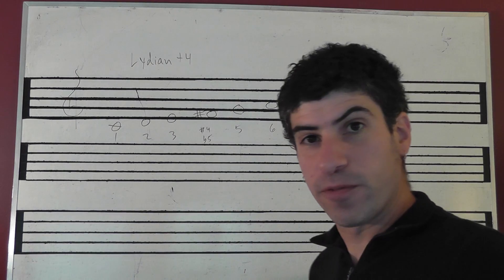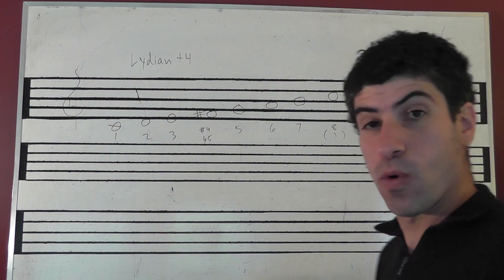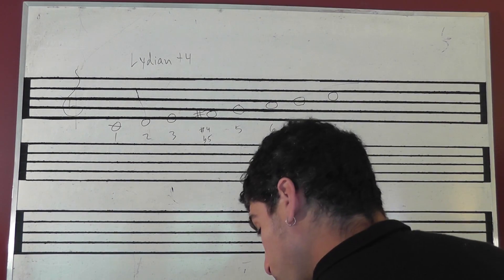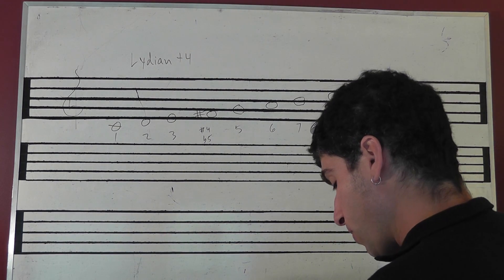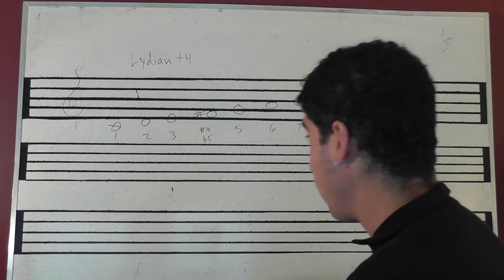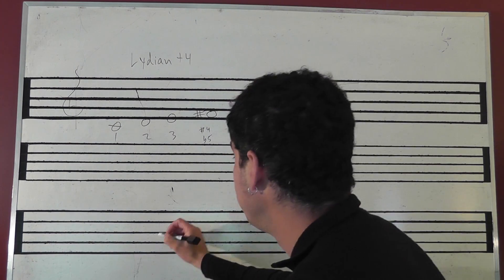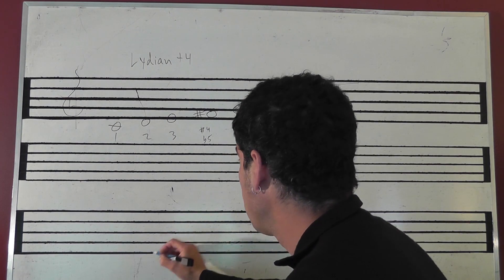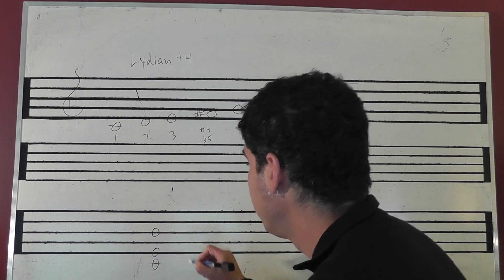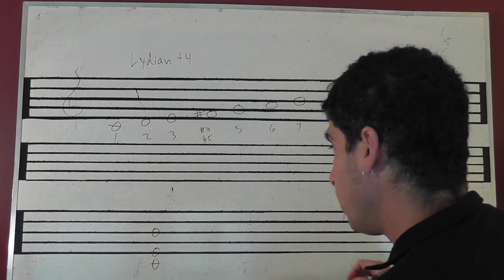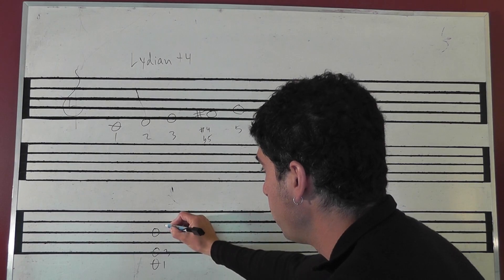So for example, if you're a horn player, you might play in your left hand on the keyboard or piano the chord. I'm just playing C, E, and B. I'm leaving out the 5 here. So I'm just playing 1, 3, and major 7.